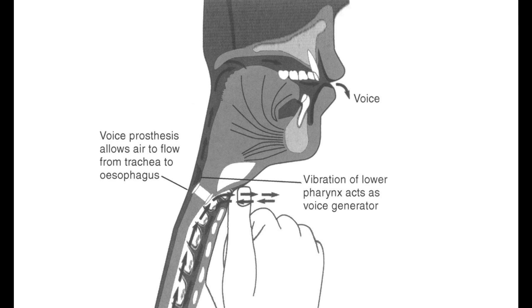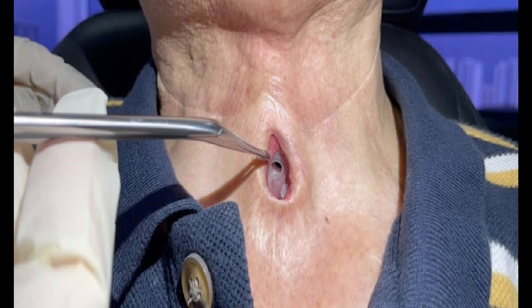There are two ways of inserting the voice prosthesis, either in retrograde manner through the mouth and throat with the help of a guide wire, or in anterograde manner directly through the tracheostoma.